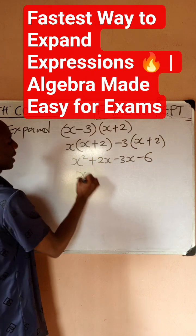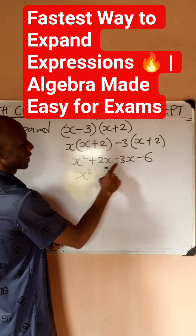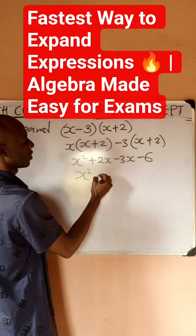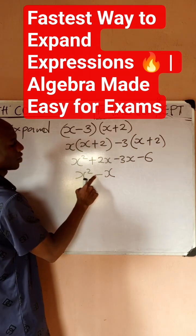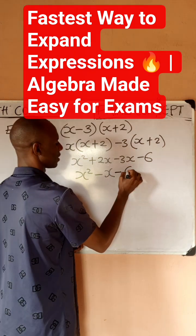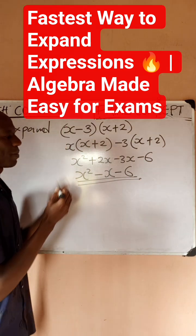So that you have x squared. 2x minus 3x is going to be minus 1x, but we don't write one. You just say minus x, then minus 6. This is our final result for the expansion.